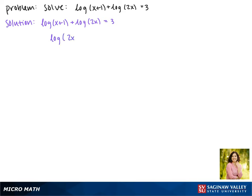This gives us log(2x(x+1)) = 3. Simplifying what's inside gives us log(2x² + 2x) = 3.